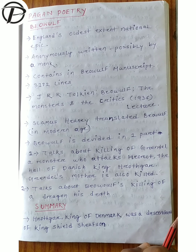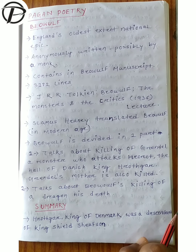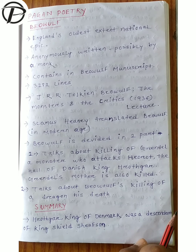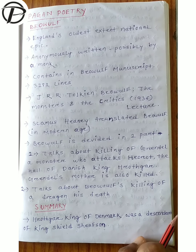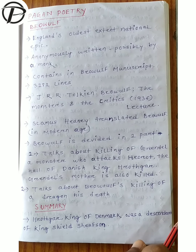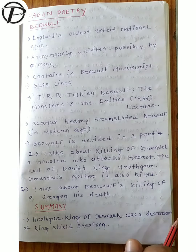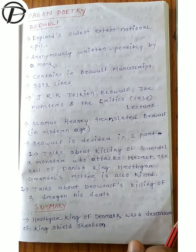Hello everybody, welcome to my YouTube channel. Prathis Ruti here and this is the second part of the Anglo-Saxon period. In the first part, the Anglo-Saxon period's historical, social and literary background was discussed, and in the literary background, we divided poetry into two parts: pagan poetry and Christian poetry.